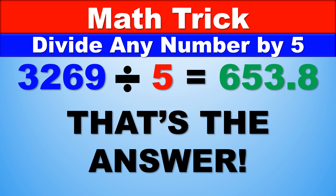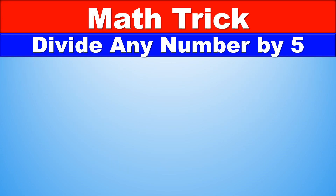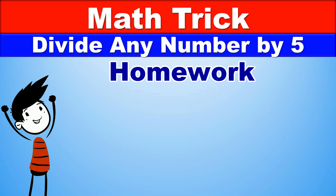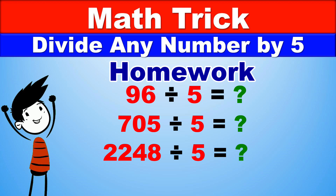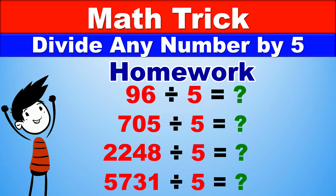Now that you've mastered how to divide any number by 5 in a matter of seconds, let's take a look at some homework just to test your ability. Try and figure out the solutions to the following problems: 96 divided by 5, 705 divided by 5, 2,248 divided by 5, and 5,731 divided by 5. Make sure to post your answers in the comment section below, and I've uploaded the answers to each of these problems in the description below.